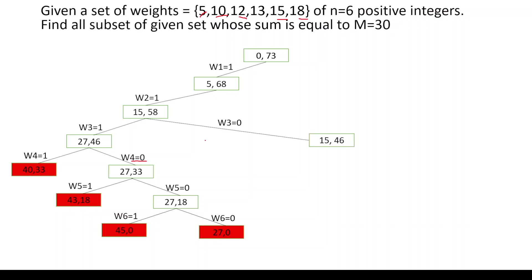So let us not add w3. If we don't add w3, the total weight available in the subset is from w1 and w2, which is 5+10 = 15. The remaining weight in the set is 13+15+18, which is 46. Now without w3, we have the option of adding w4. When we add w4 we get a weight of 28, which is less than 30, and the remaining is 15+18 = 33.